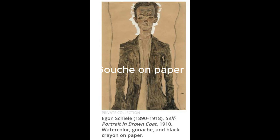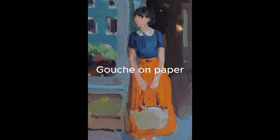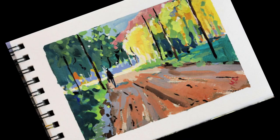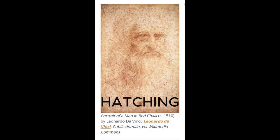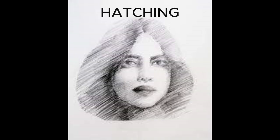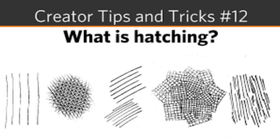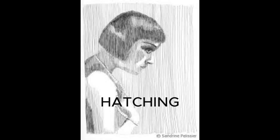There are many techniques used in self-portraiture. One is gouache on paper, a painting technique in which a gum or opaque white pigment is added to watercolors to produce opacity. Another is charcoal on gray-blue ingres paper. A hatching technique using pencil on paper involves a series of lines drawn along the main line of your drawing to create shadow and depth.